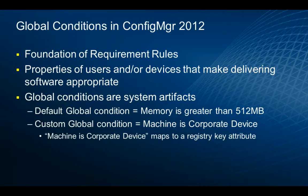Properties of users and their devices that make delivering software appropriate make up the requirement rules. These are conditions that are system artifacts. They can be default global conditions, where things like a memory setting is detected or queried, or they can be custom settings, such as whether a machine is a corporate device, a registry key value, a primary machine, etc.